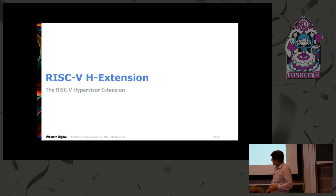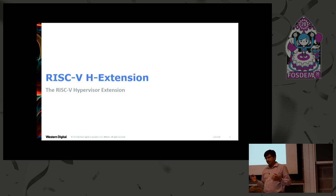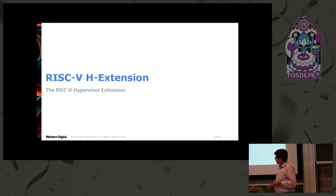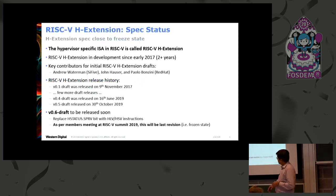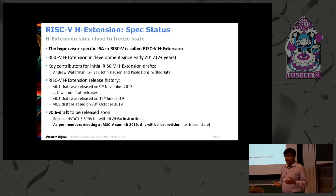Starting with the RISC-V H-extension, or the hypervisor extension as we call it. RISC-V is not just one ISA — it's actually a set of ISAs where each ISA targets a particular functionality. The H-extension is an ISA which targets the hypervisor functionality for RISC-V, and it's been in development for more than two years now.